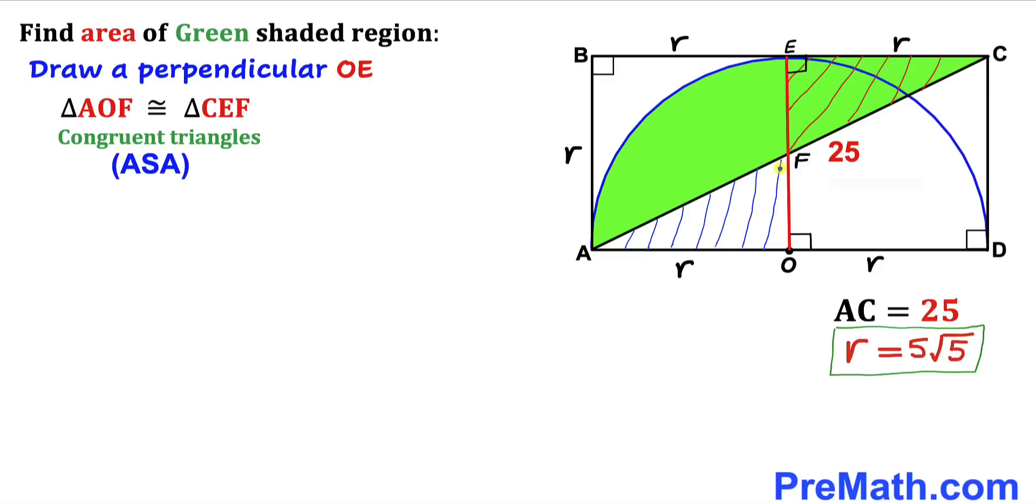And we can see that these two right triangles AOF and CEF are congruent triangles according to angle-side-angle theorem. Because in these triangles these angles are 90 degrees. This angle and this angle are congruent since they are interior alternate angles.